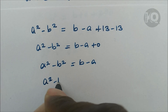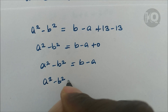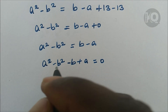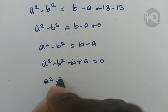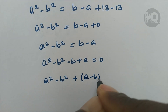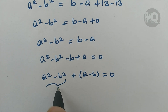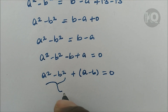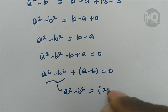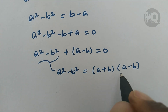Let's rearrange this equation. Bringing the right-hand side terms to the left gives a squared minus b squared plus (a minus b) equals zero. Using the algebraic identity, a squared minus b squared equals (a plus b)(a minus b).